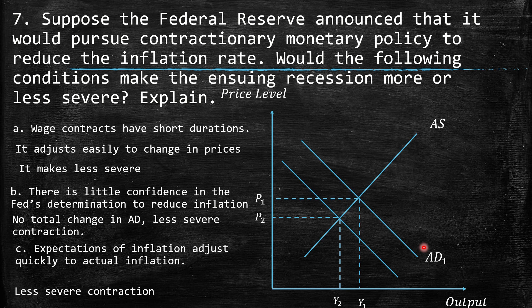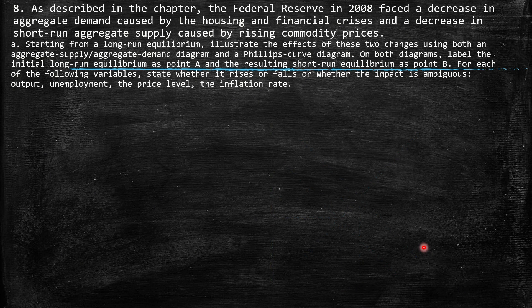Part C: Expectations of inflation adjust quickly to actual inflation. Under this situation, it should again be a less severe contraction, because monetary policy is definitely effective. The change in unemployment should be lower — in fact, the unemployment rate should be exactly equal to the natural unemployment rate, because the gap is zero when actual inflation is exactly equal to expected inflation.